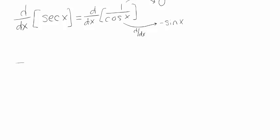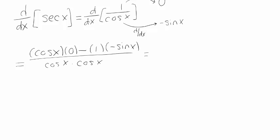So now I'm ready to use my quotient rule. It's the bottom function times the derivative of the top function minus the top function times the derivative of the bottom function, all over the bottom function squared. Now I can simplify this a bit.